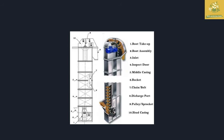The bucket has two holes for attachment. The next part is the discharge port, where the grain exits. The eighth part is the pulley or sprocket. The ninth part is the head casing at the top of the elevator.